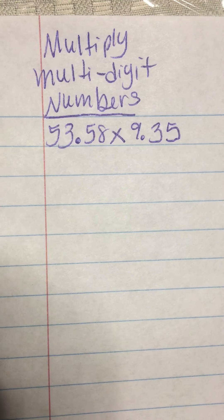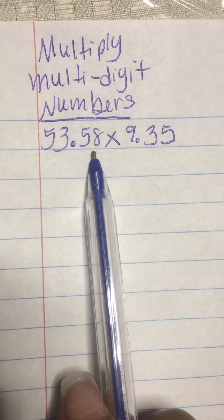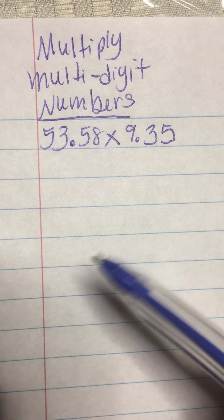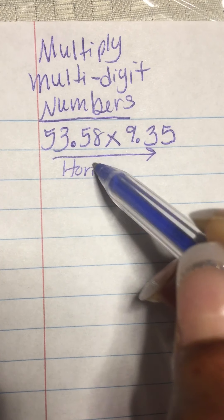Hi class, this is Ms. Champagne and today I'm going to teach you how to multiply multi-digit numbers. We're going to start with 53.58 times 9.35 and as you can see it is written horizontally.